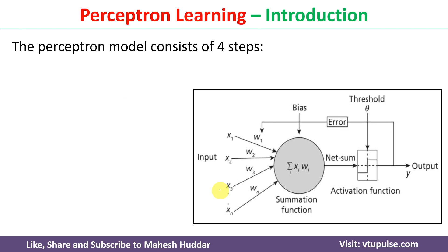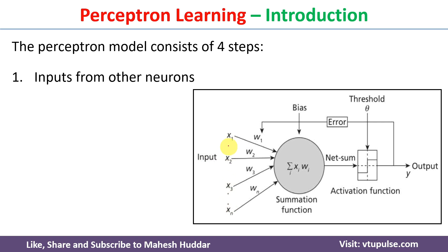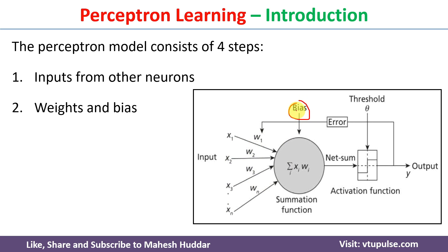Perceptron learning consists of four components. The first component is input from other neurons — you can see here x1, x2, x3, and xn are the inputs coming from other neurons. For each and every input, there is an associated weight: w1, w2, w3 through wn, and there is also an associated bias.